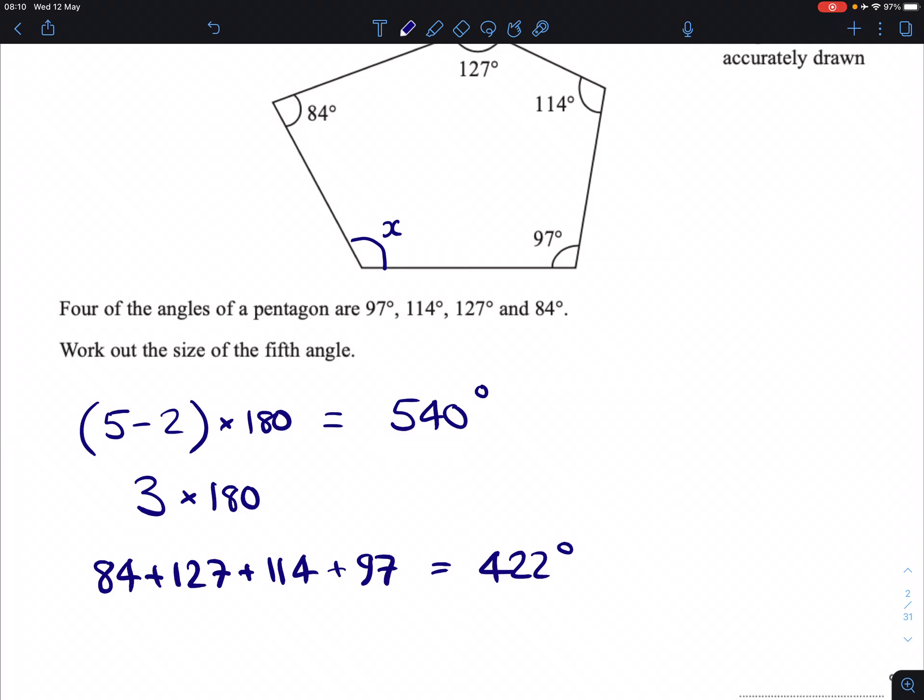Which means what's left over, do 540, take away 422, and we end up with 118 degrees.